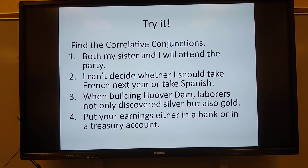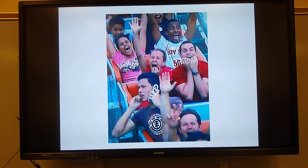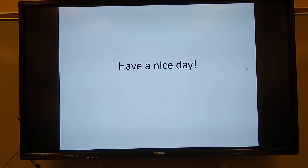And last but not least: put your earnings either in a bank or in a treasury account. What are the correlative conjunctions? Say it out loud. Good — either/or is the correlative conjunctions. So there you have it, little fifth graders: correlative conjunctions. And don't forget it.